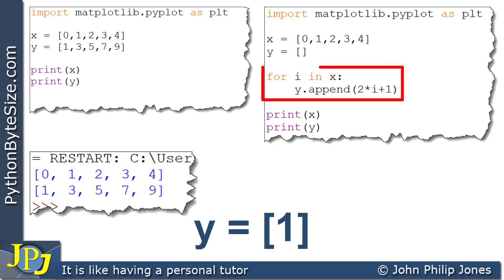Because this is a loop, we go around the loop again. And on this occasion, i picks up the next item in the x list, which is 1. So this is 1 multiplied by 2 to give 2 plus 1 is 3. So 3 is now appended to y. And I'm showing that below. So now we can see that y has got 1 and 3 in it.